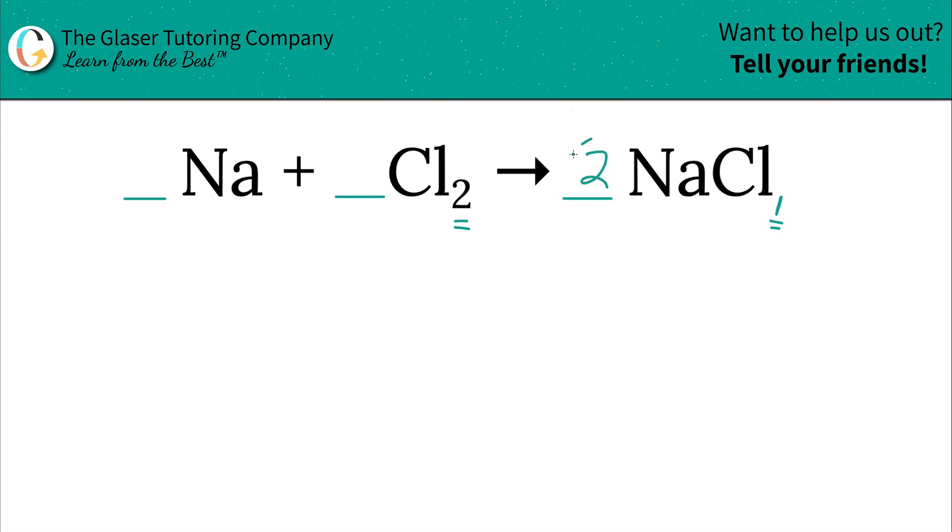So if you take two and you multiply it by one, you get a total of two chlorines on the right hand side, and you also had two chlorines on the left hand side. So that balances now the chlorine.